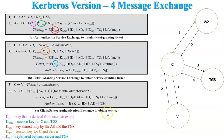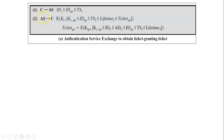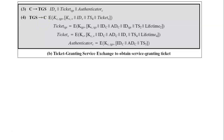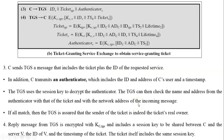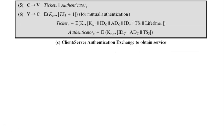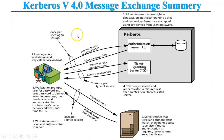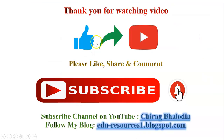The fifth and sixth steps form the client-server authentication exchange for obtaining services. The explanation of these six steps is covered across the next three slides: the first slide explains communication between the client and authentication server, the second slide covers the client and ticket granting server, and the third slide covers the client and server. Finally, a Kerberos version 4 message exchange summary slide is also provided.